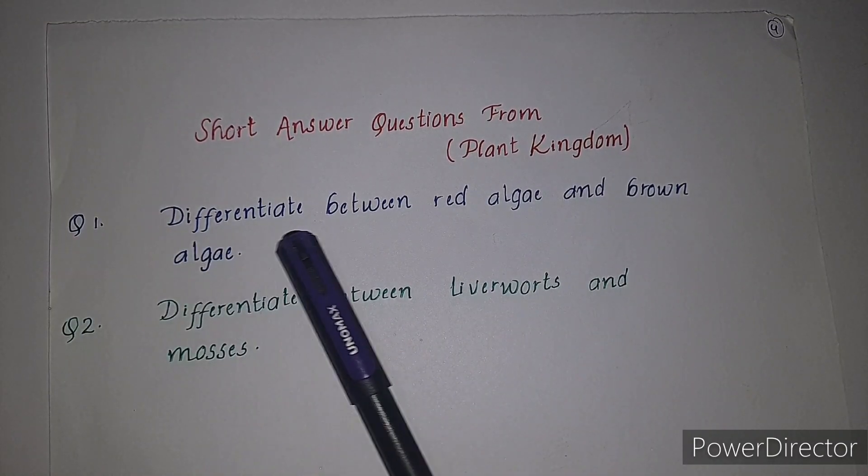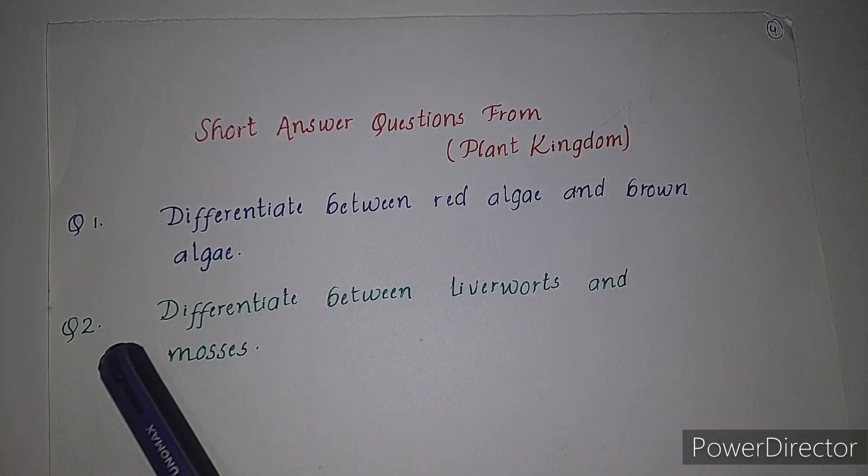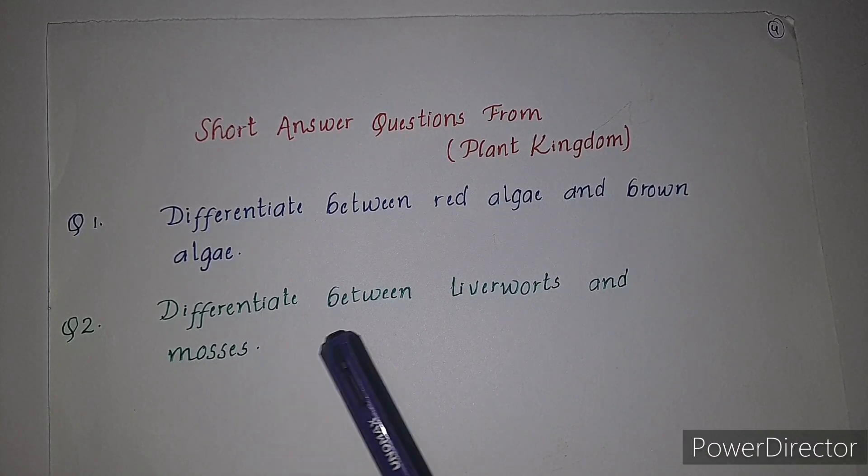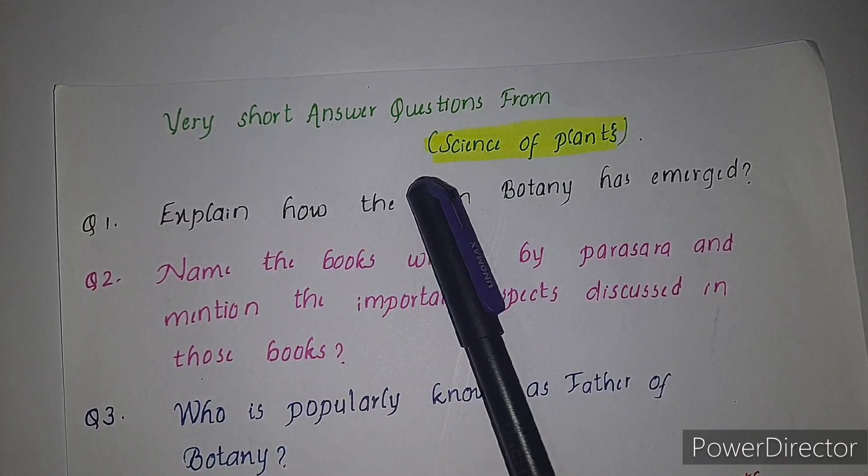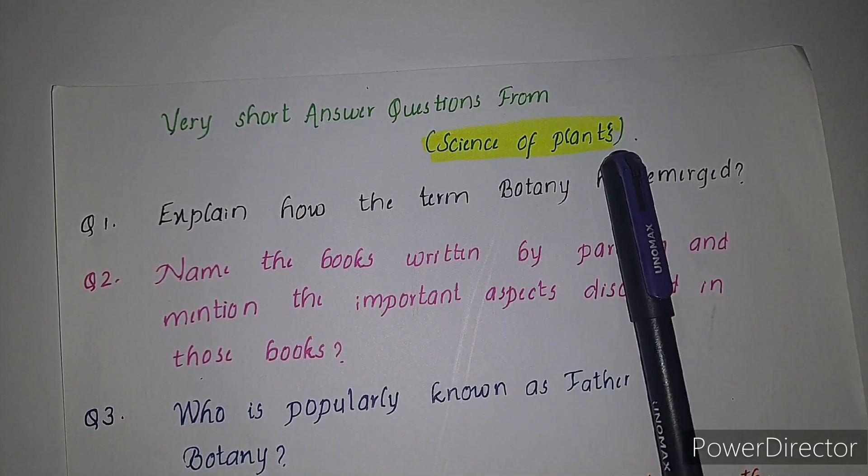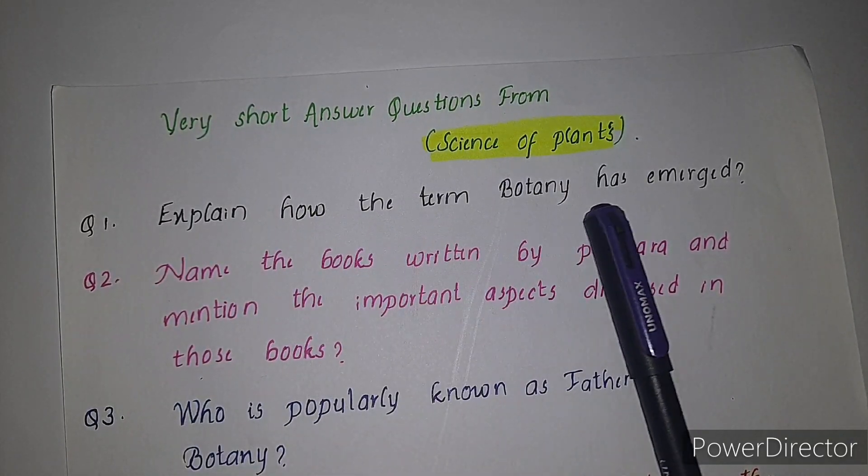Short answer questions from plant kingdom. First question: differentiate between red algae and brown algae. Second question: differentiate between liverworts and mosses. Very short answer questions from science of plants. First question: explain how the term botany has emerged.